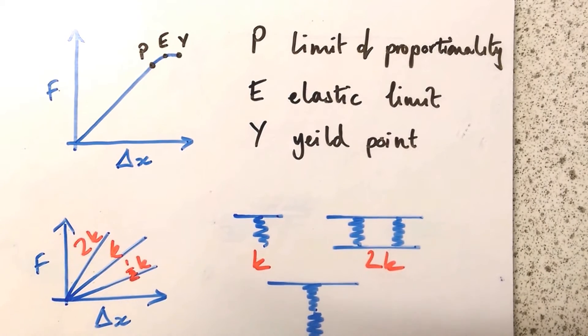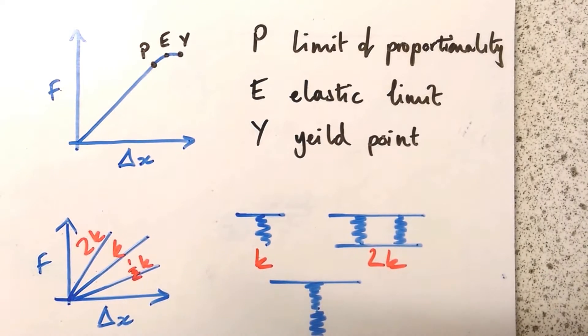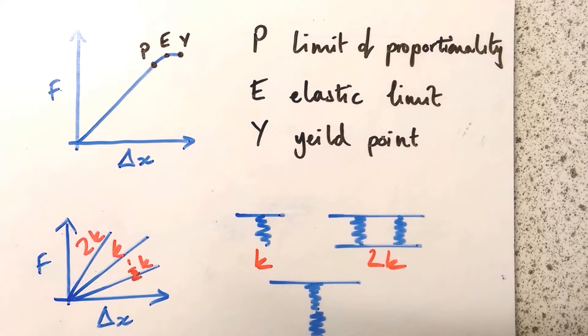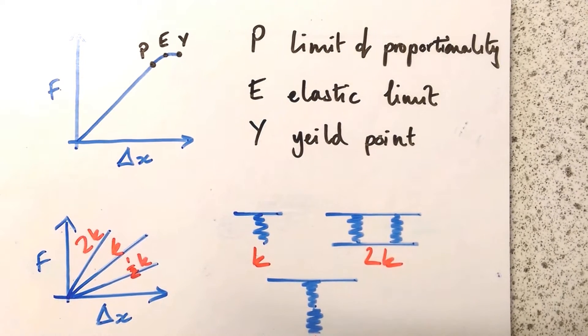P is called the limit of proportionality. That's the point at which a spring stops obeying Hooke's Law. It's no longer proportional - F is no longer proportional to Δx.